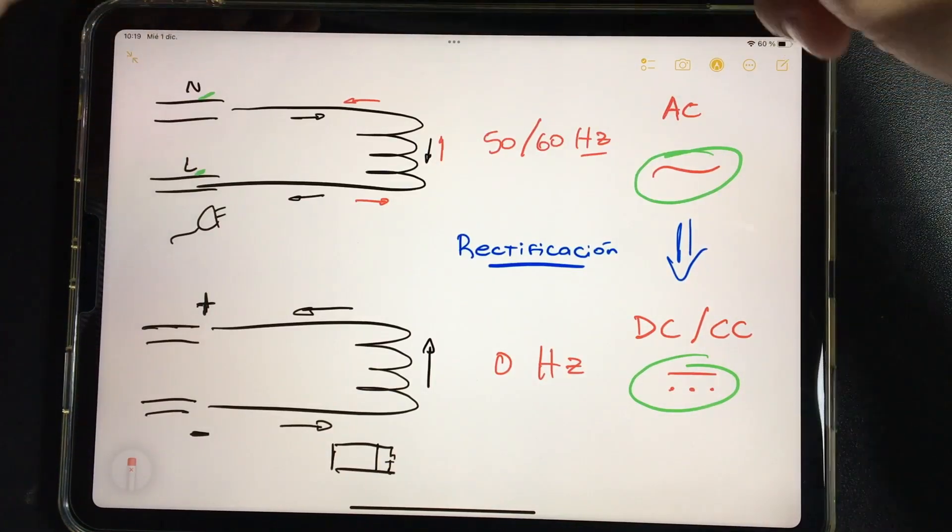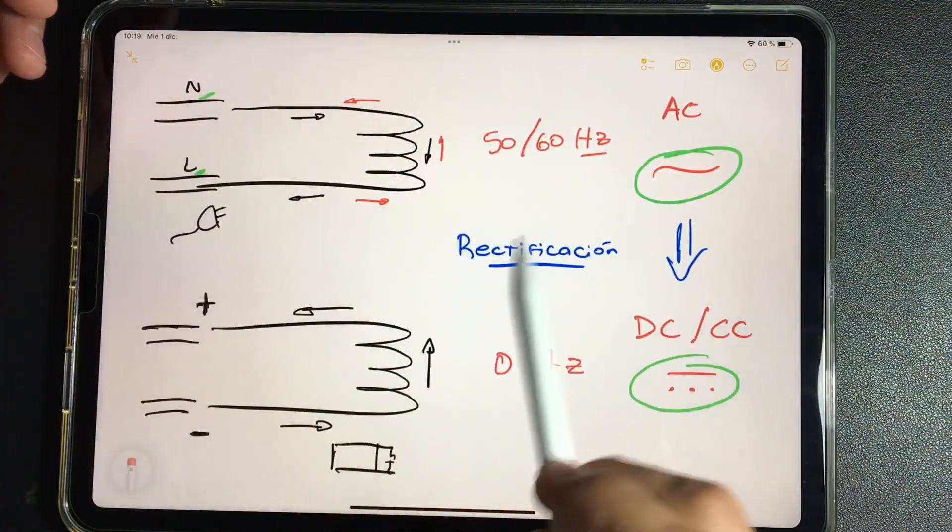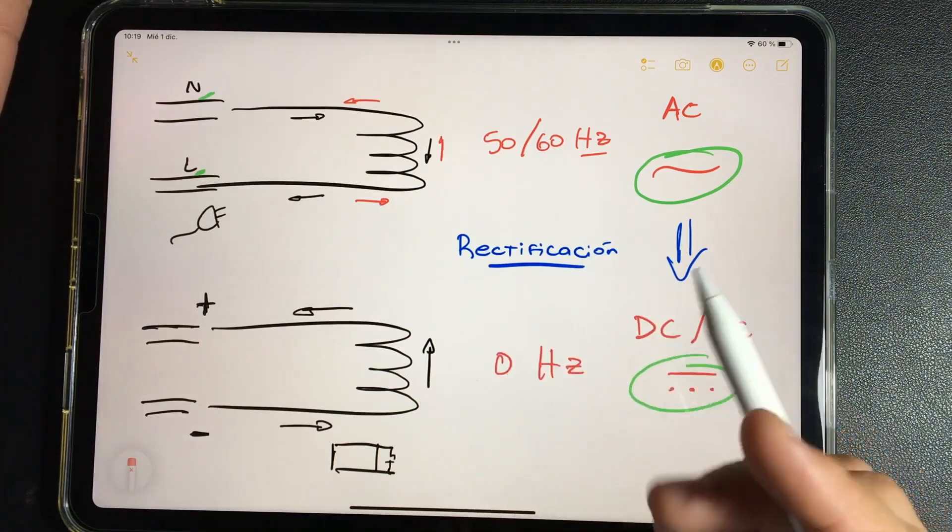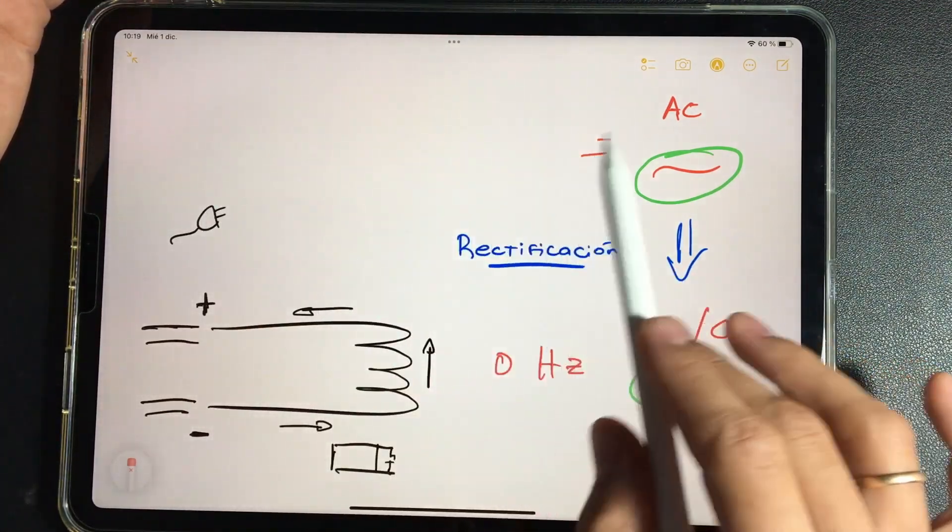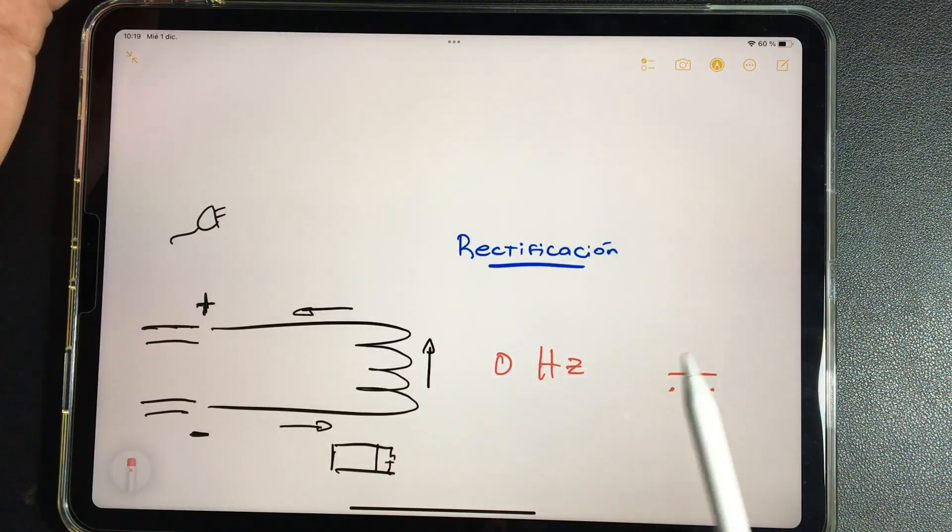Well, very good. So, to understand the rectification process in our water comparison circuit, we have to add one more element. And this is, many of you surely know, a check valve or a non-return valve.